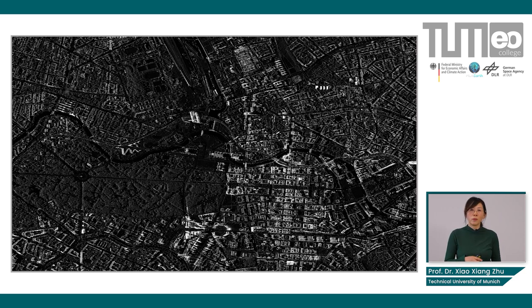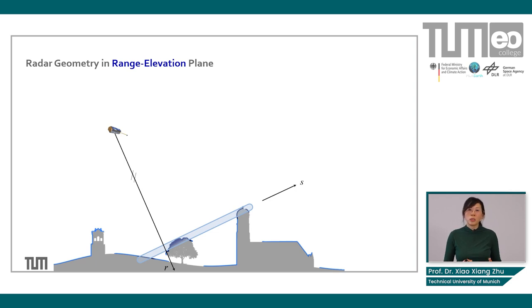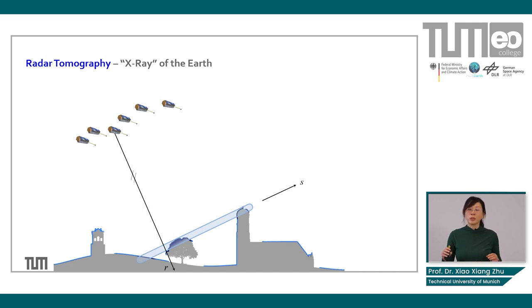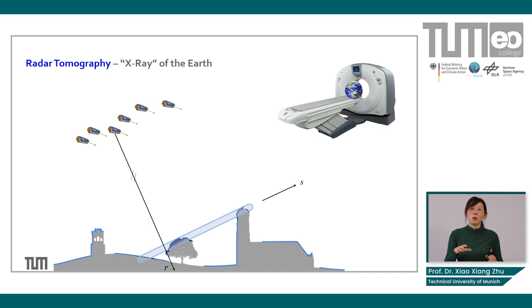To get 3D information from radar you can compare it to CT scanning. Each satellite image can be considered as a tomographic slice recording reflectance from the Earth's surface. TerraSAR-X revisits the same place every 11 days from a slightly different position, providing angular diversity and building up a synthetic aperture in the elevation direction. With multiple scans of the Earth's surface, using model-based radar tomography — also called the X-ray of the Earth — we are able to achieve 3D reconstruction of an entire city.